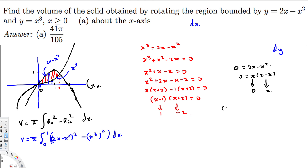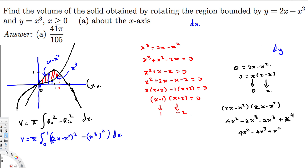We need to expand (2x − x²)². Writing it out: (2x − x²)(2x − x²) = 4x² − 2x³ − 2x³ + x⁴ = 4x² − 4x³ + x⁴. And x³ squared is x⁶. So plugging in: V = π ∫₀¹ [4x² − 4x³ + x⁴ − x⁶] dx.